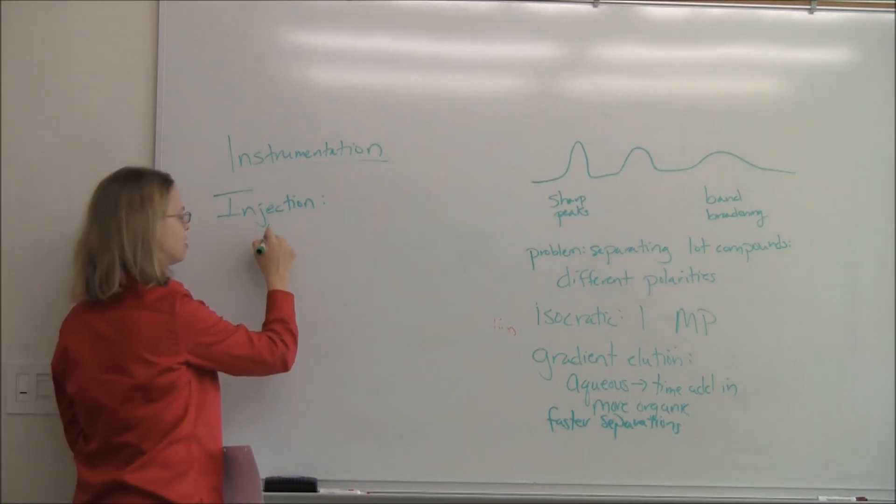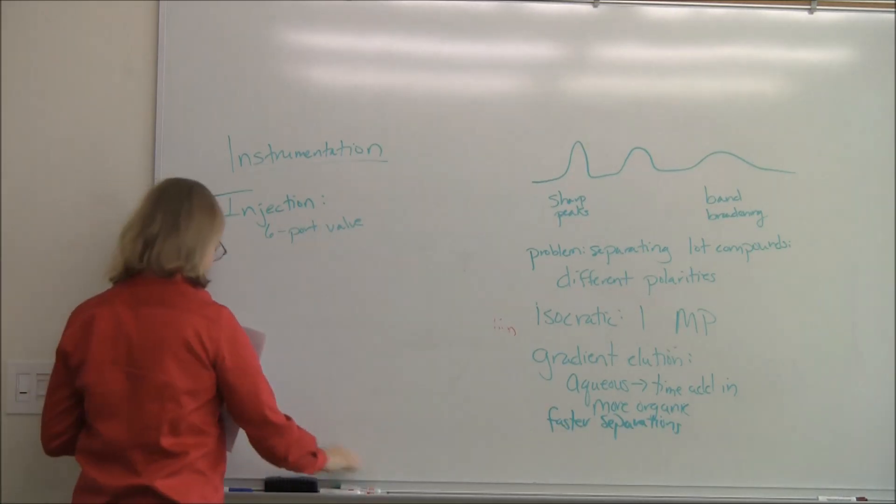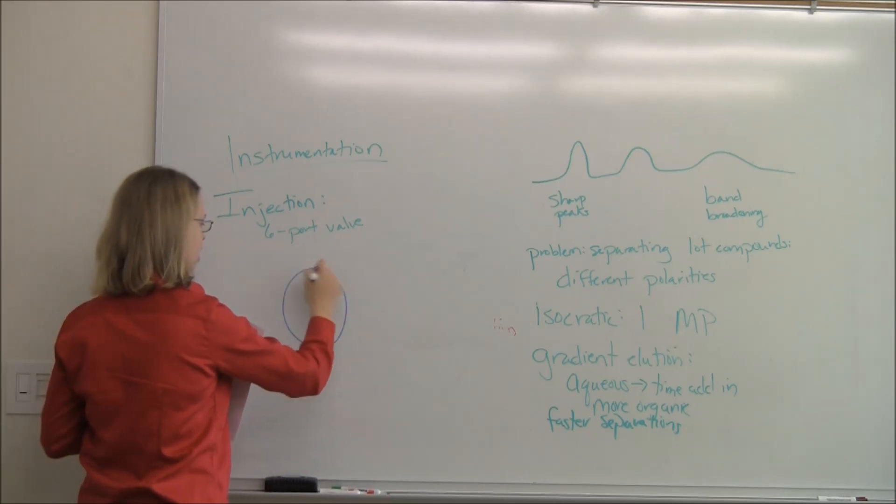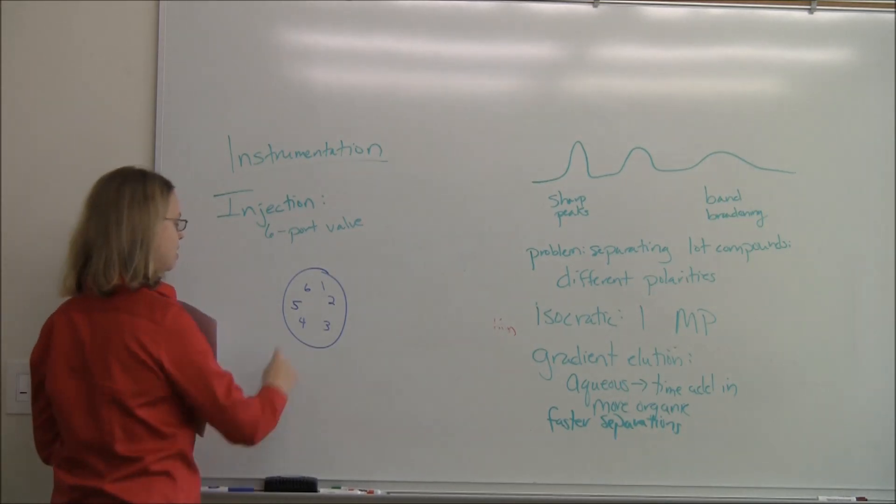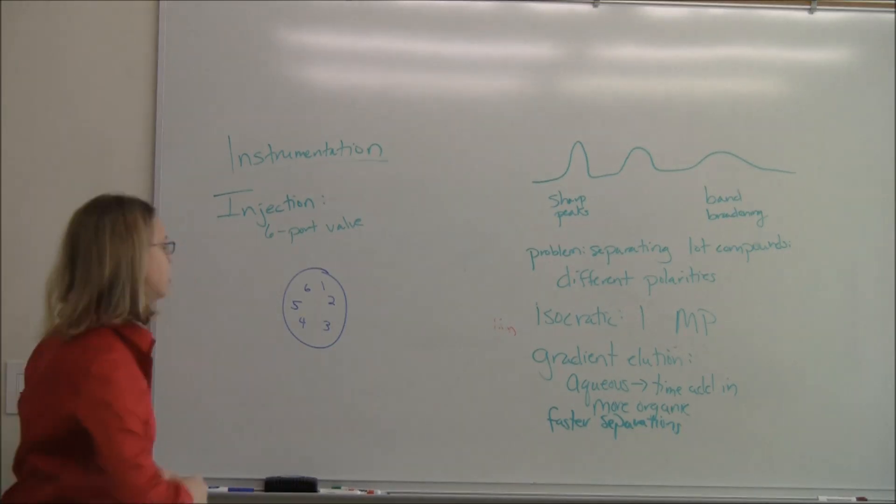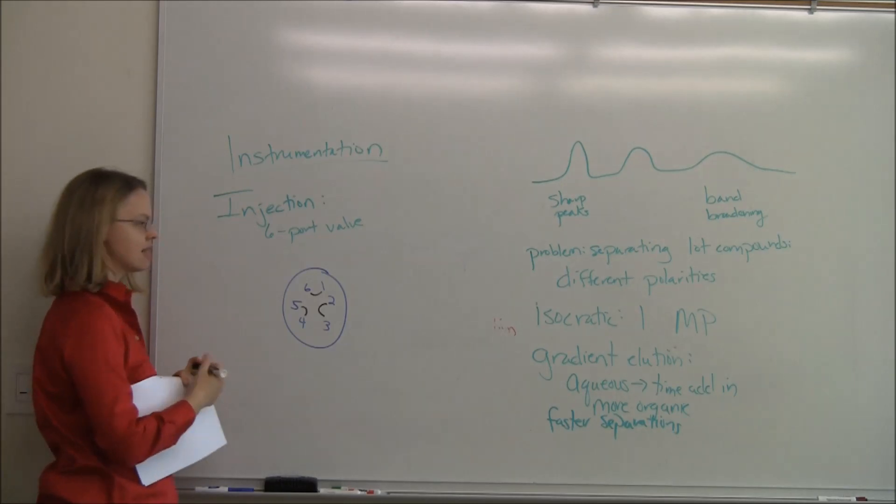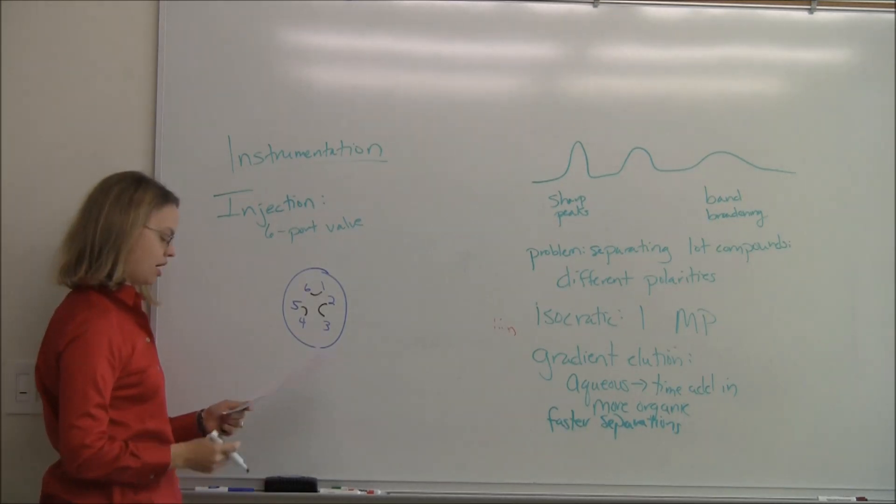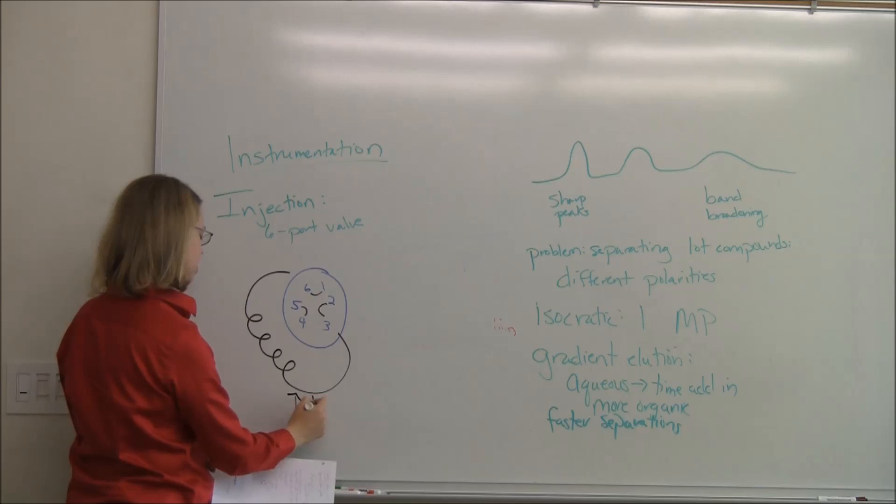Almost all HPLCs use something called a six-port valve for the injection. You see these commonly in other places too. Let's imagine a valve for a minute. There are going to be six ports on this valve. One, two, three, four, five, six. You can imagine that inside the valve what happens is that we have little connections. These connections start, let's say first one is connected to six, two is connected to three, and four is connected to five. On the outside of these valves, we have different things coming in. Between six and three, we might have a loop.